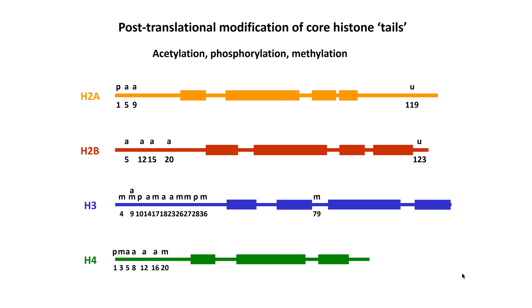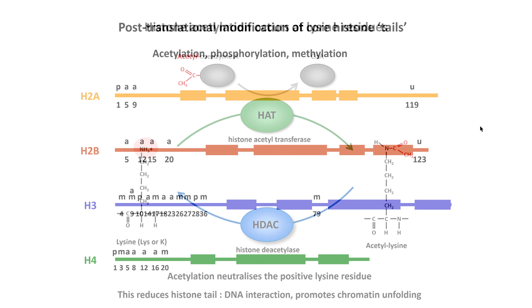The tails are subject to a large number of post-translational modifications. What I've summarized here are the modifications well understood to be linked to gene transcription: acetylation (denoted with an A), phosphorylation, methylation, and ubiquitination. But there are many other kinds of post-translational modification and many other residues that are modified. This is quite a complex array of modifications that can change the nature of a nucleosome.